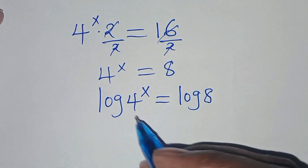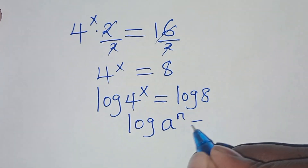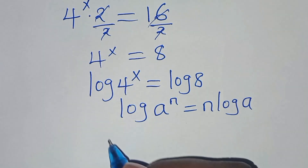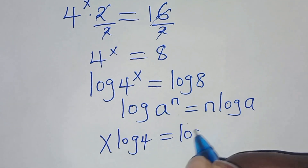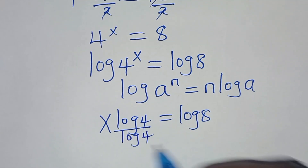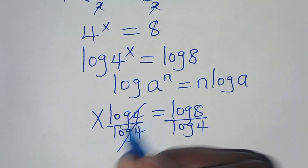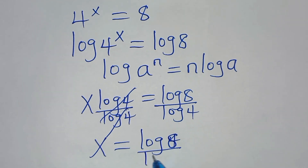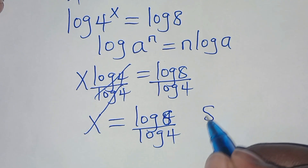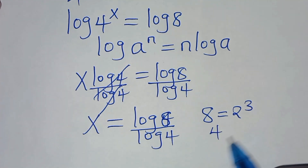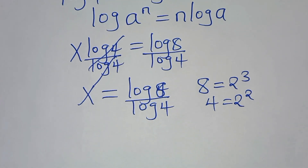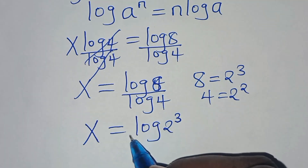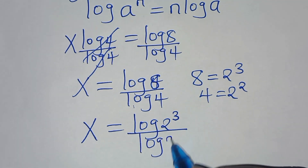Applying the power rule property, log a to the power of n equals n log a. So log 4 to the power of x becomes x log 4, this is equal to log 8. Dividing both sides by log 4, we have x equals log 8 divided by log 4. We can express 8 as 2 to the power of 3, and 4 as 2 to the power of 2. So x equals log of 2 to the power of 3, divided by log of 2 to the power of 2.